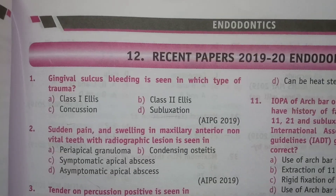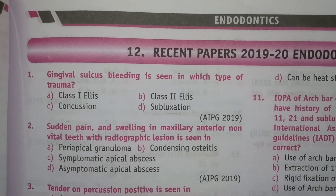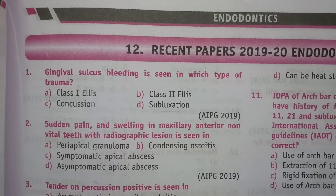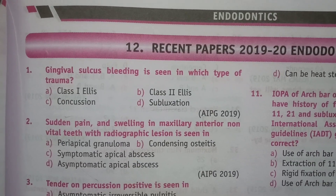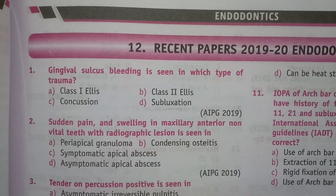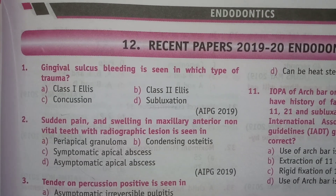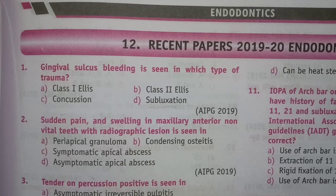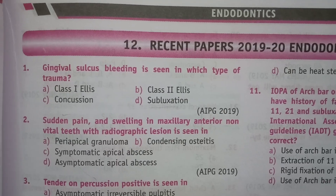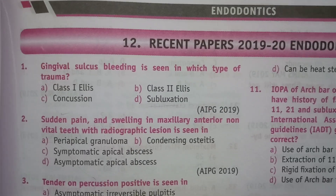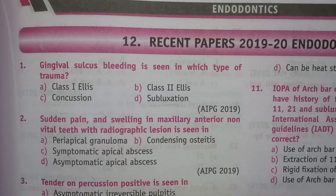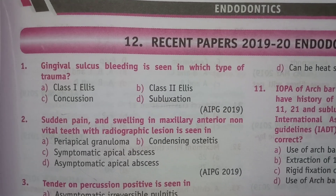First question: gingival sulcus bleeding is seen in which type of trauma? Options: Class 1, Class 2, concussion, subluxation. The answer is D, subluxation.